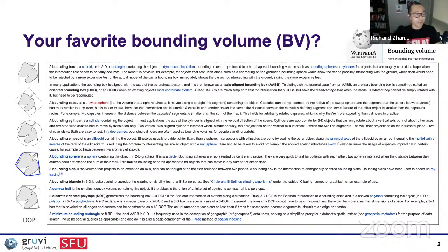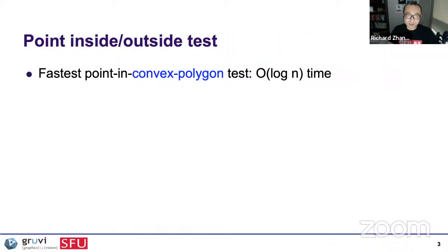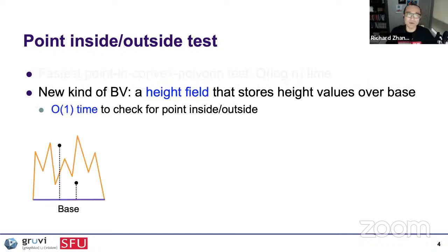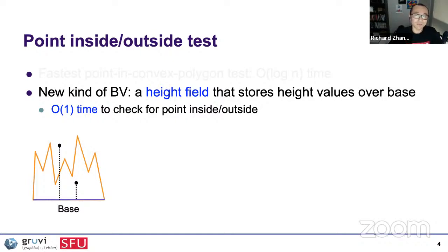My favorite is the convex hull. For the use of bounding volumes, we often try to find whether a point is inside or outside — the classical collision detection test. The fastest point-in-convex-polygon test runs in O(log n) time. Now I want you to think about another, maybe new kind of bounding volume. Everyone knows about height fields — I'm referring to height fields as a bounding volume. In the context of computing whether a point is inside or outside a height field, if it's represented by storing height values, it only takes constant time to test.